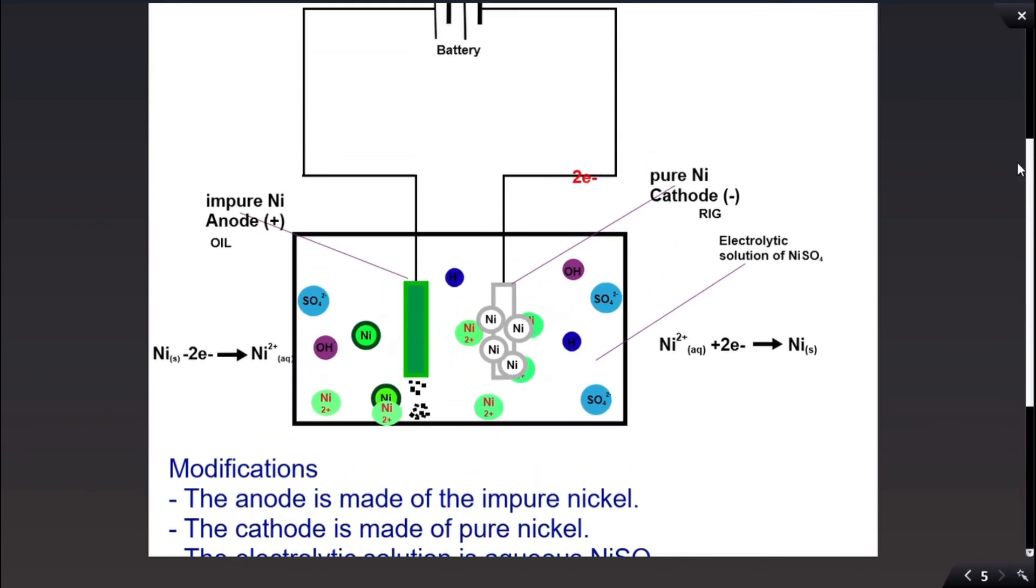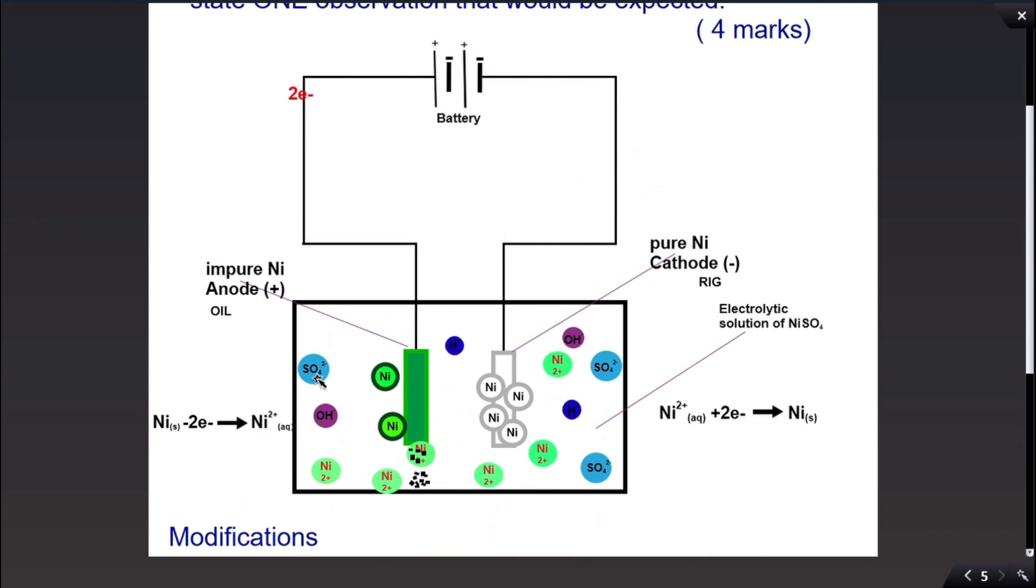All of that you can see taking place here. So the battery pulls the two electrons from the anode and carries them around the circuit to the cathode, where the nickel 2+ ions pick up those two electrons to form nickel solid. As you can see, they are deposited onto the cathode, where the cathode increases in mass. Reduction is taking place at the cathode.